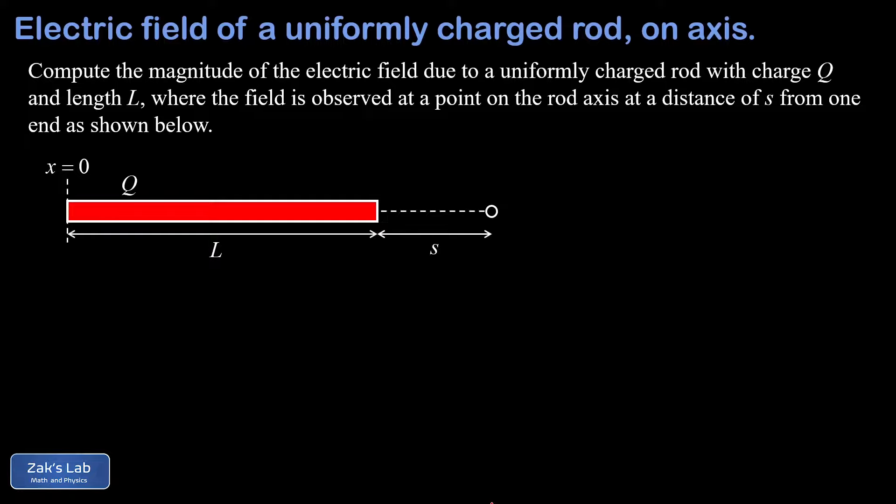So to clarify what I mean we have a diagram of the rod arranged with one end at the origin or x equals zero and we can see the observation point which lies on the same axis as the rod itself and it's a distance of s from the right end of the rod.